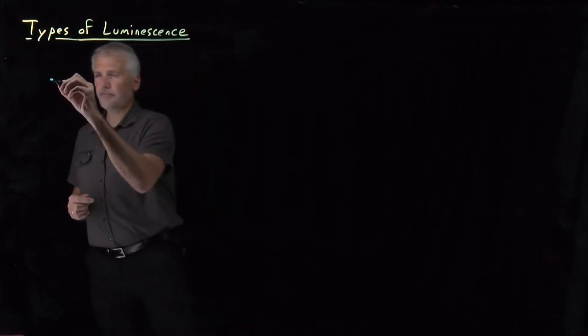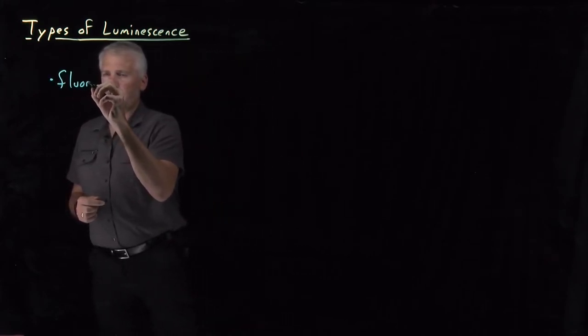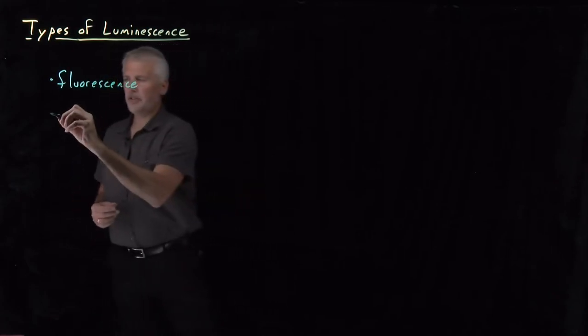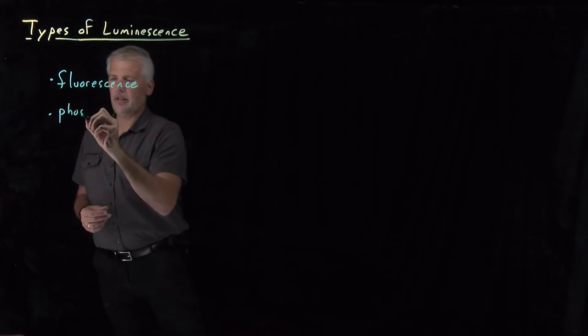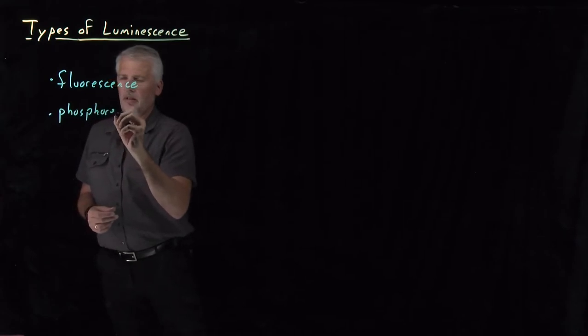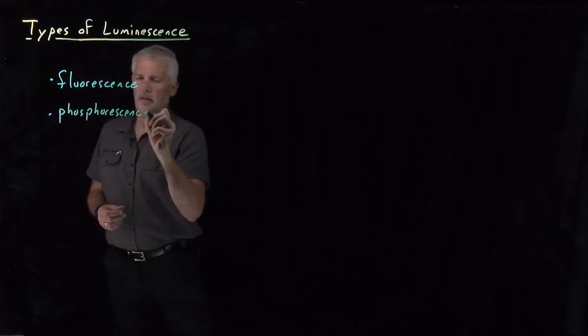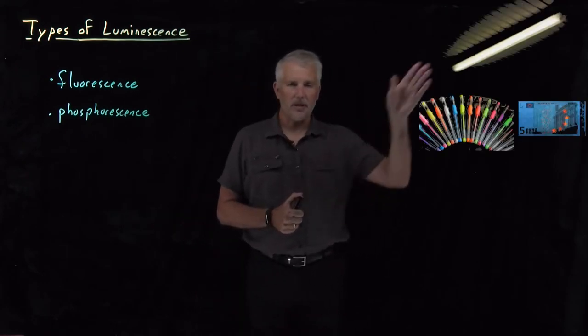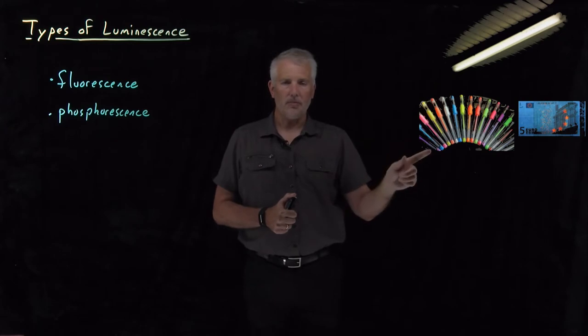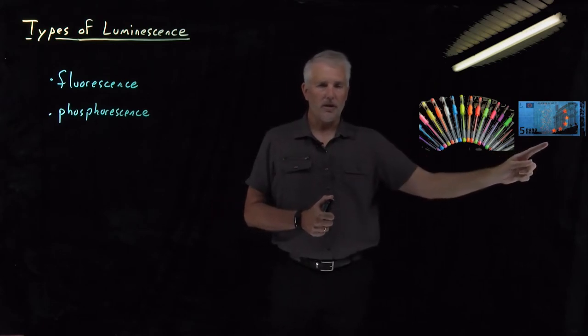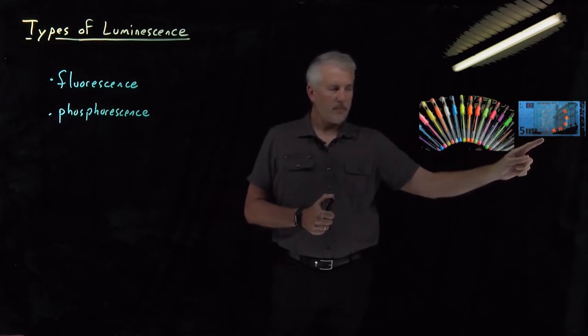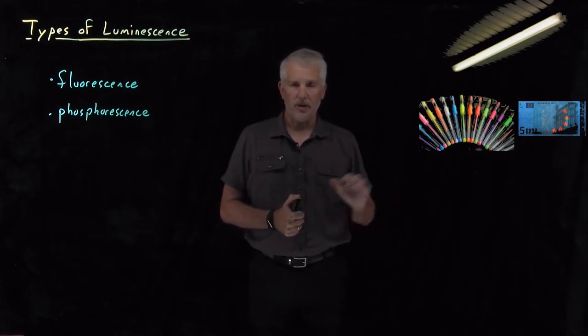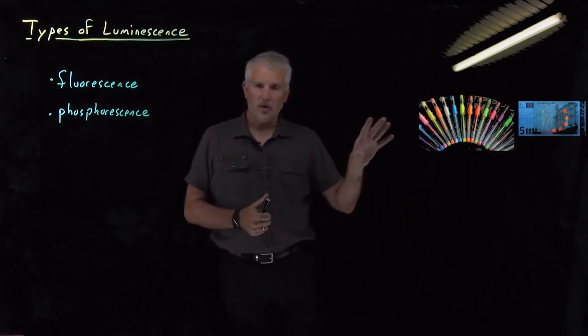First of all, just as a reminder, we have fluorescence and phosphorescence. Fluorescence, if I pull up a picture over here of some examples of fluorescent objects, either a fluorescent light bulb or some fluorescent markers or the fluorescent pieces that are embedded in the printing on dollar bills, both in the U.S. and in other countries, those are all examples of fluorescence.